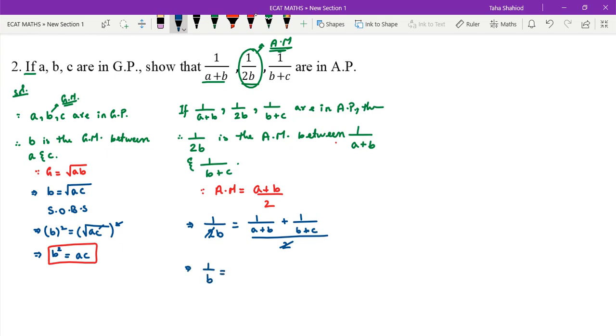1/B equals... we will take (A+B) and (B+C) product. Cross multiplication: B+C plus A+B equals... now we have 1/B equals...